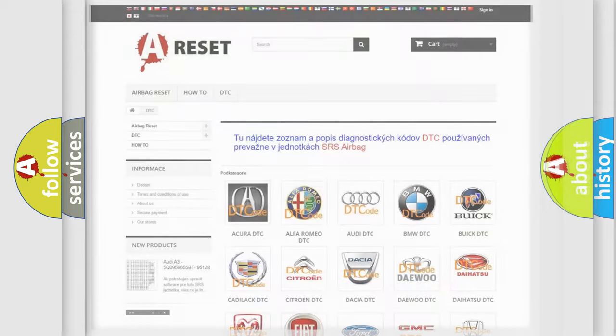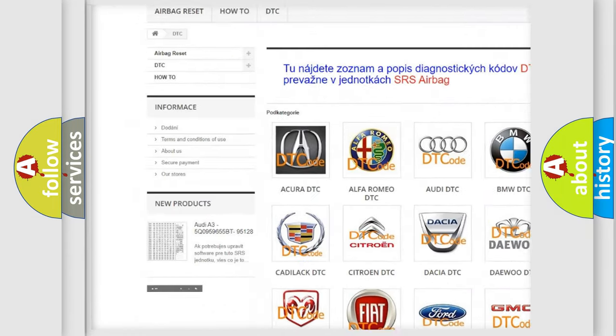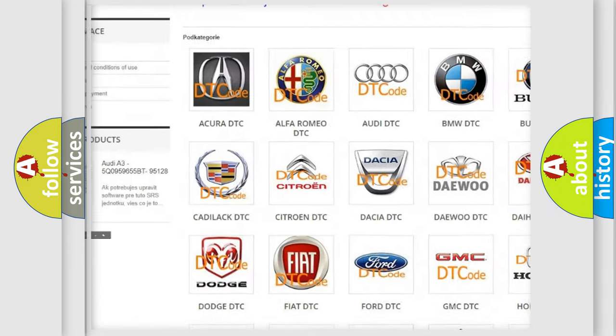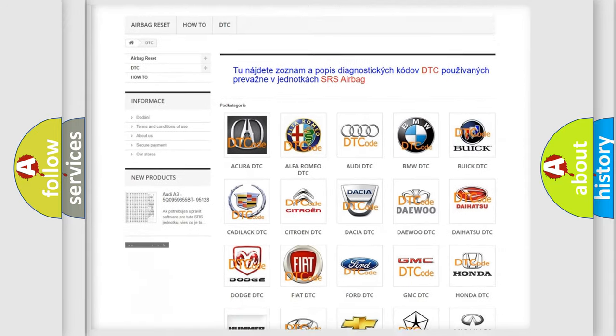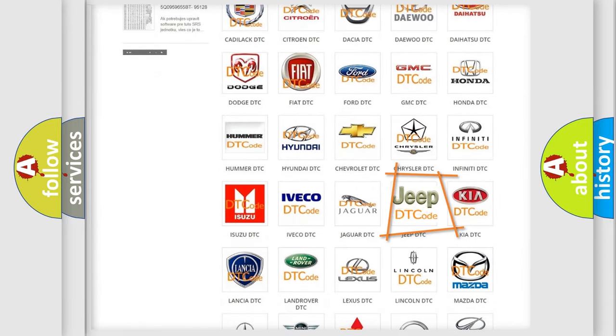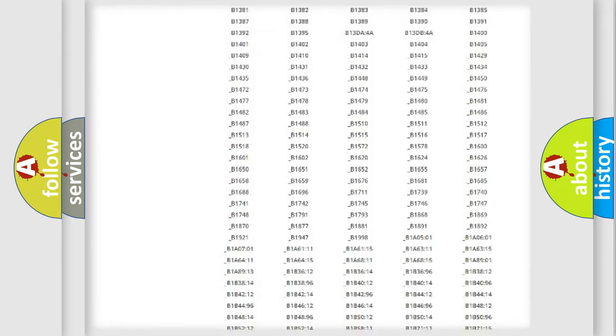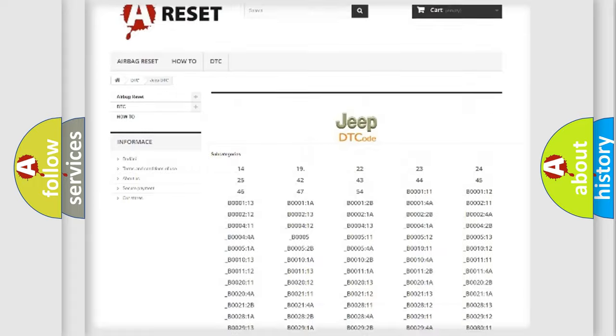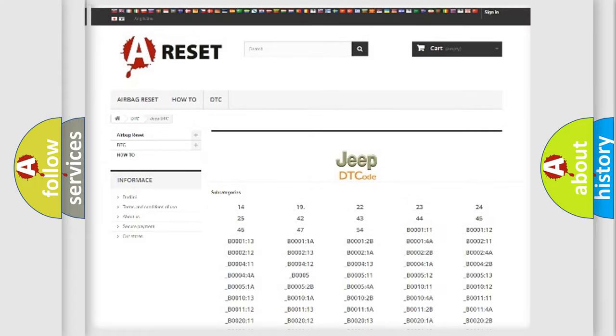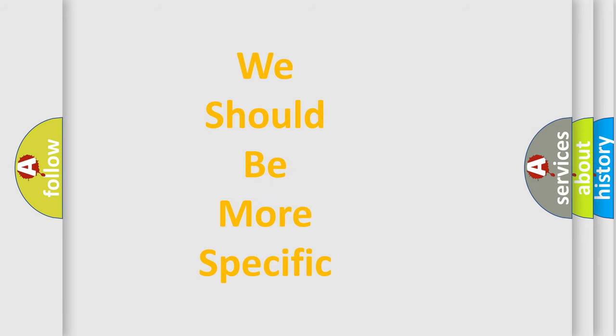Our website airbagreset.sk produces useful videos for you. You do not have to go through the OBD2 protocol anymore to know how to troubleshoot any car breakdown. You will find all the diagnostic codes that can be diagnosed in Jeep vehicles, and many other useful things. The following demonstration will help you look into the world of software for car control units.